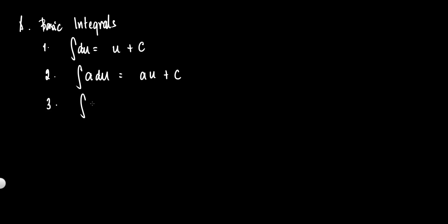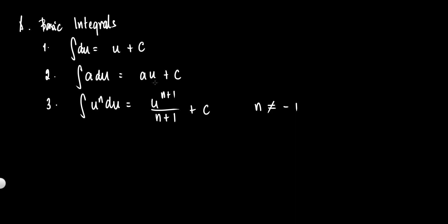Number three: the integral of u raised to n du is equal to u raised to n plus 1 over n plus 1, plus c — provided that n is not equal to negative 1. Because if n is negative 1, the power formula is not applicable; you'd end up dividing by zero, so the power formula cannot be used.